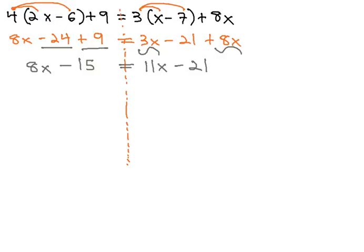Now we're ready to continue solving by balancing. Right now, the variable is on both sides of the equation. We like to move them to the same side, so we can start moving away from the variable. We can get rid of 8 positive x's with 8 negative x's so that they subtract out to 0, leaving us with negative 15 equals 3x minus 21.